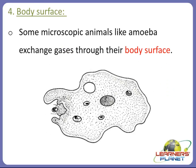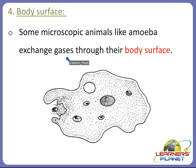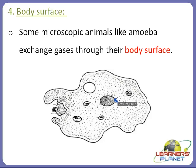Another breathing method is through the body surface — simply considered as skin. Some microscopic animals like amoeba exchange gases like oxygen and carbon dioxide through their body surface. Amoeba does not have any specific organ for respiration, so it exchanges gases through its body surface. Other animals like frog and earthworm also breathe through their moist skin.